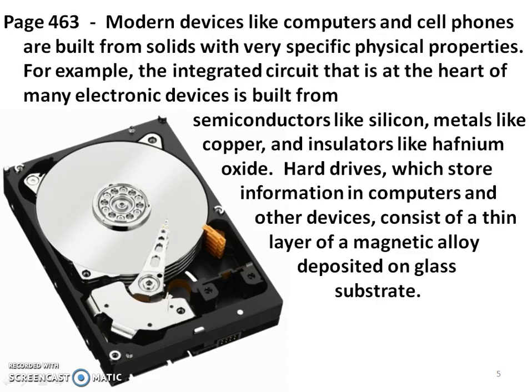Modern devices like computers and cell phones are built from solids with very specific physical properties. For example, the integrated circuit at the heart of many electronic devices is built from semiconductors like silicon, metals like copper, and insulators like hafnium oxide. Hard drives which store information in computers consist of a thin layer of magnetic alloy deposited on a glass substrate.